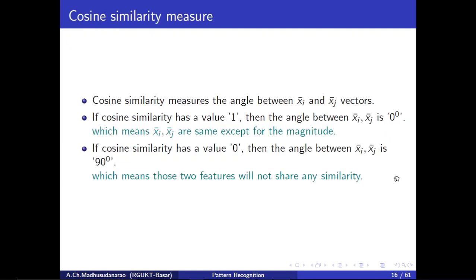When the cosine of the angle between two feature vectors is close to 1, those features share nearly the same information and can be called redundant features. We can then remove one of them to reduce dimensionality.